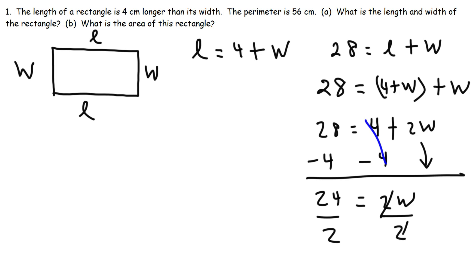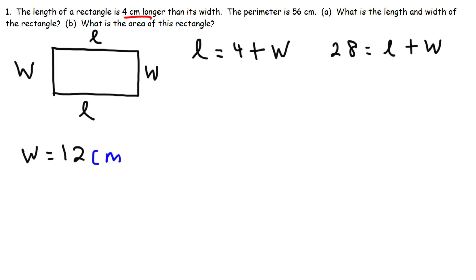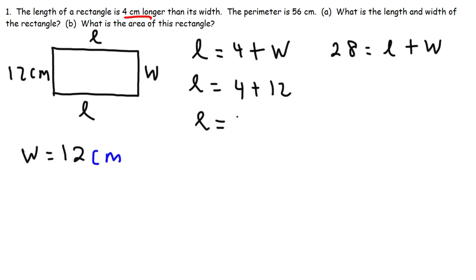Dividing both sides by 2: 24 divided by 2 is 12, so W equals 12 centimeters — that is the width of the rectangle. Now let's calculate the length. Plugging W into the first equation: L equals 4 plus W, which is 4 plus 12, giving us L equals 16 centimeters.